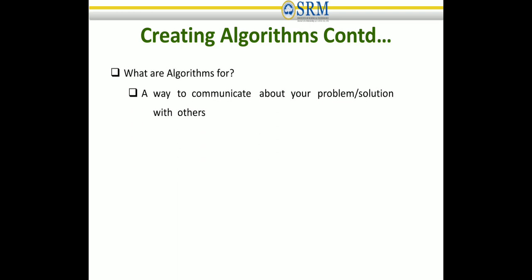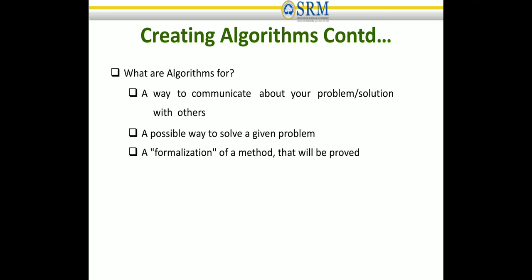Algorithms are a way to communicate your problem or solution with others. Whenever there is a given problem, we need steps to solve it — which we call a way to communicate to attain the solution. It is a formula, or a set of methods, procedures, or activities. Every formula can be proved, so basically an algorithm is a formula or a formalization of a method.